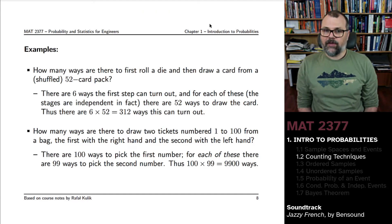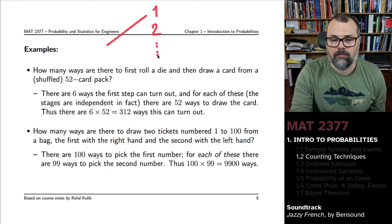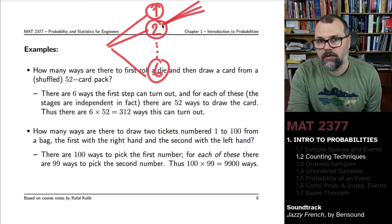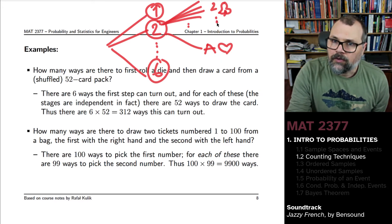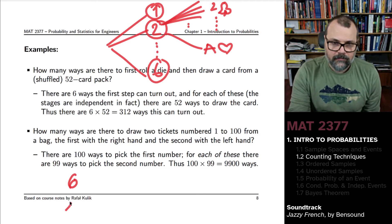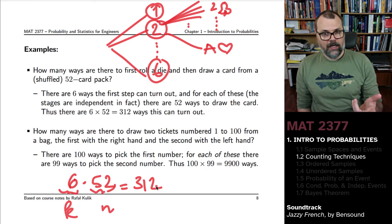Well, there's six ways that the first step can turn out. You can roll a 1 or 2 or 3 or 4 or 5 or a 6. And once you've rolled one of these for each of them, I'm only going to draw them here for the, assuming you rolled the 2, there's 52 ways. There's 52 ways to draw a card. So six ways to roll the die, that's the K, times 52 ways to draw a card. That's the N, and that gives you a total of 312 ways that you can combine rolling a die together with picking a card.